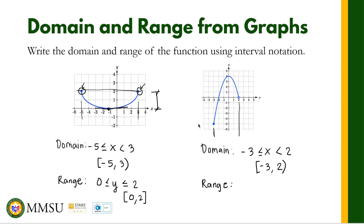The range is the set of Y values. Starting from the lowest point, that's negative 5, up to the highest point, that's positive 4. Both negative 5 and positive 4 are included. So therefore, the range is Y is greater than or equal to negative 5 but less than or equal to positive 4. Using interval notation, we have negative 5 to positive 4, closed brackets. And that's how you determine the domain and range of a function if you are given a graph.